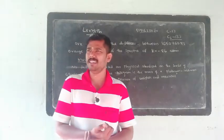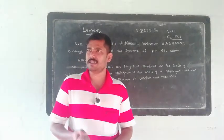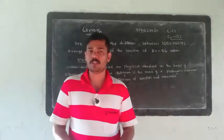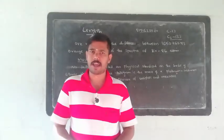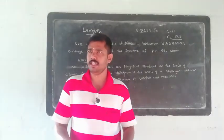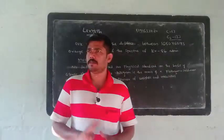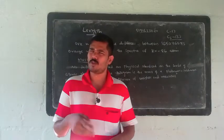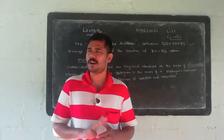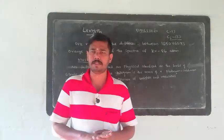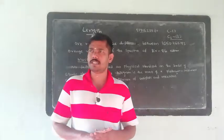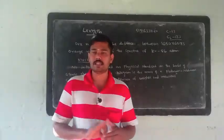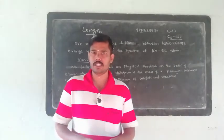In summary, for mass, length, and time — the base units — we have three unit systems to classify them: the SI unit system, CGS unit system, and English unit system.